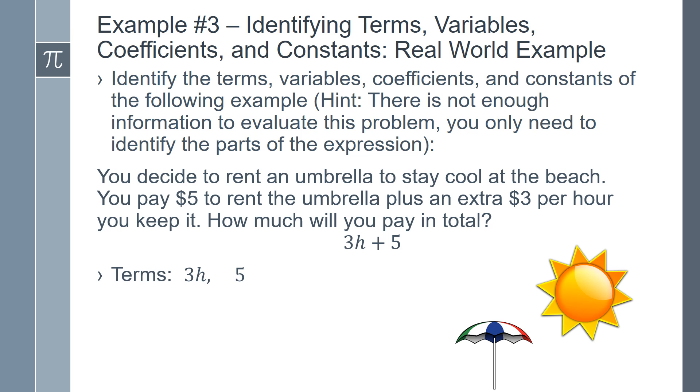The terms are 3h and 5. The variable is h, which stands for hours. The coefficient is 3, which signifies the $3 per hour that you pay. And the constant is 5, which is the initial $5 you pay to rent the umbrella.